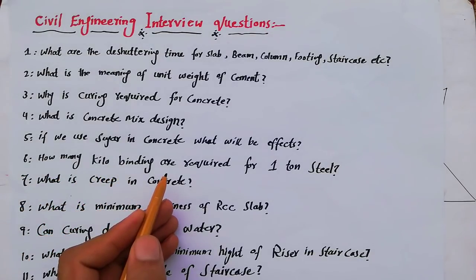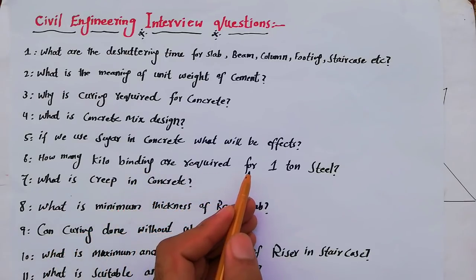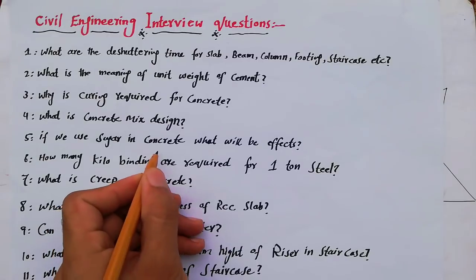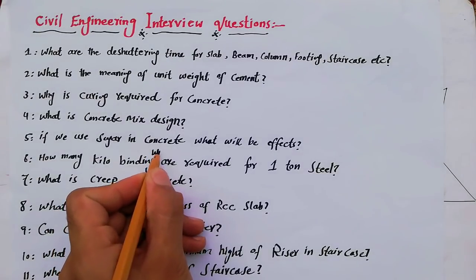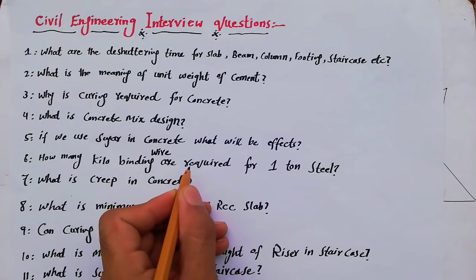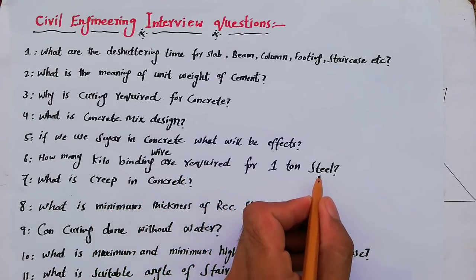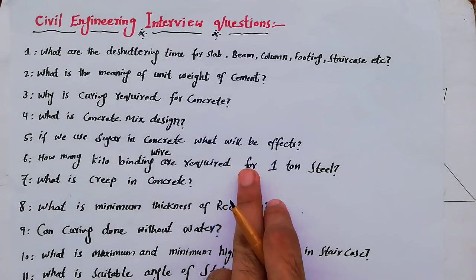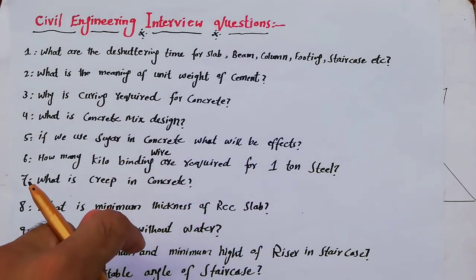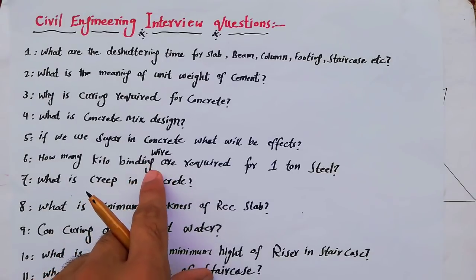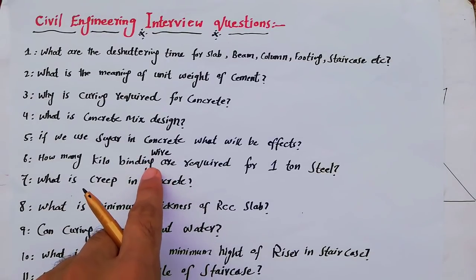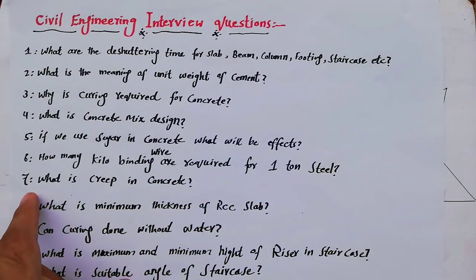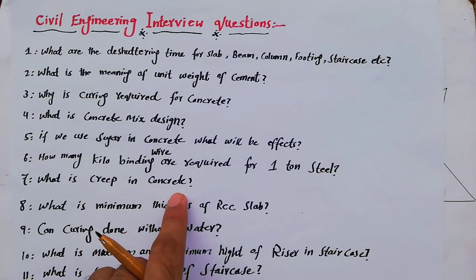The sixth question is: how many kilograms of binding wire are required for one ton of steel? I have already discussed this in a previous video, which is also linked in the description. It covers why we use binding wire and how much binding wire is required for one ton of steel. It is also available on my website.